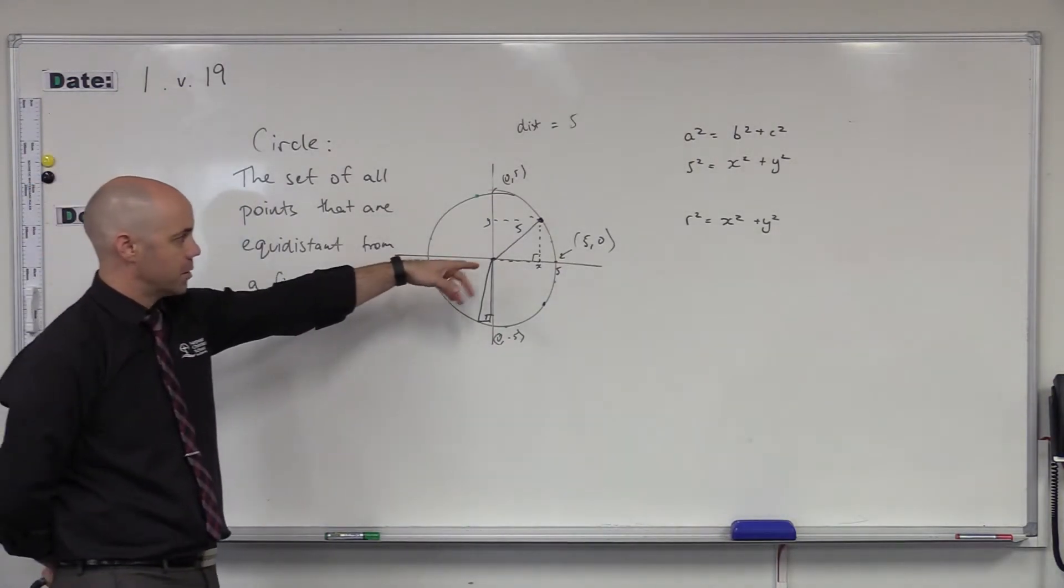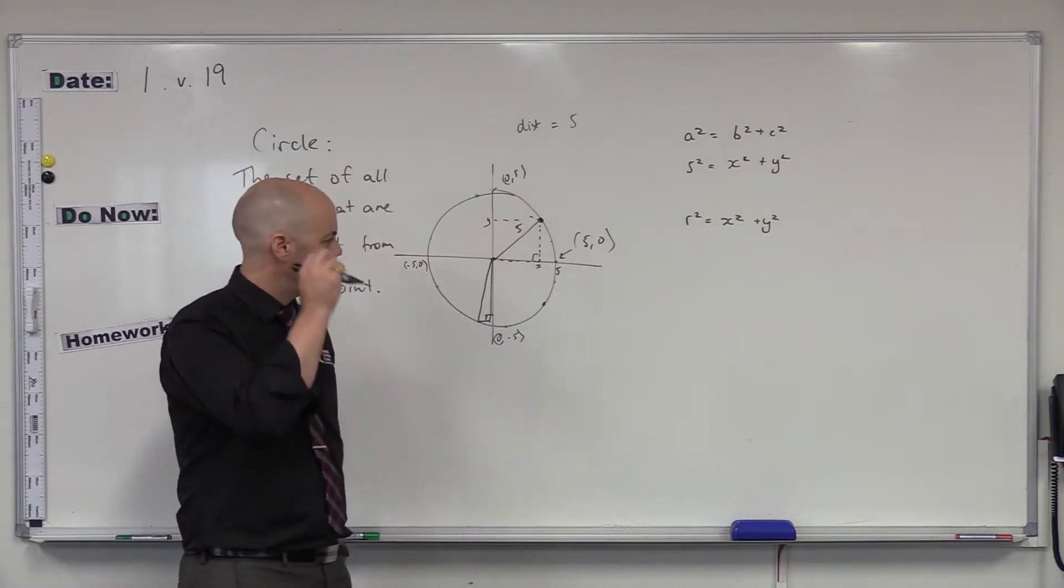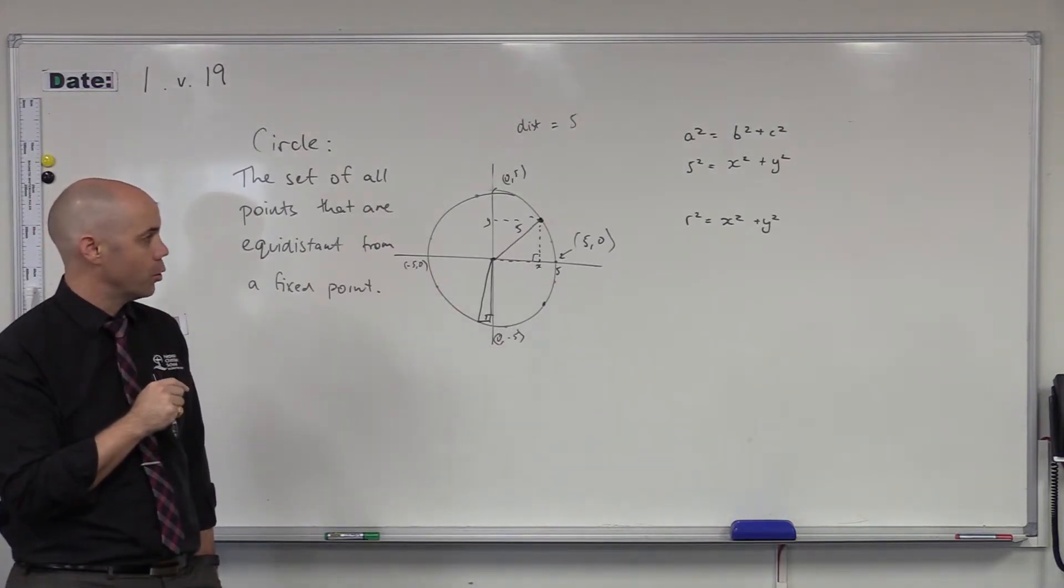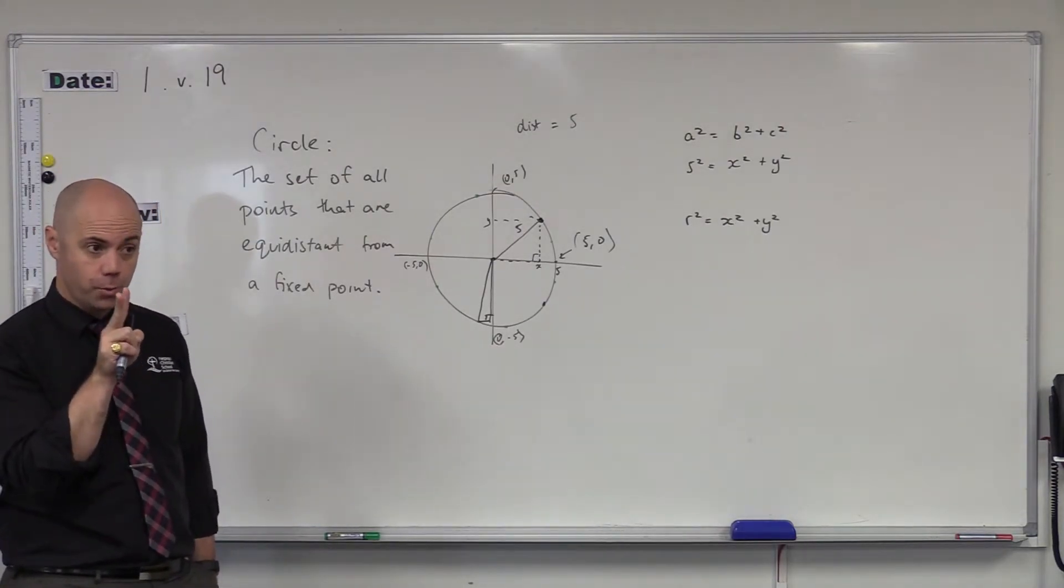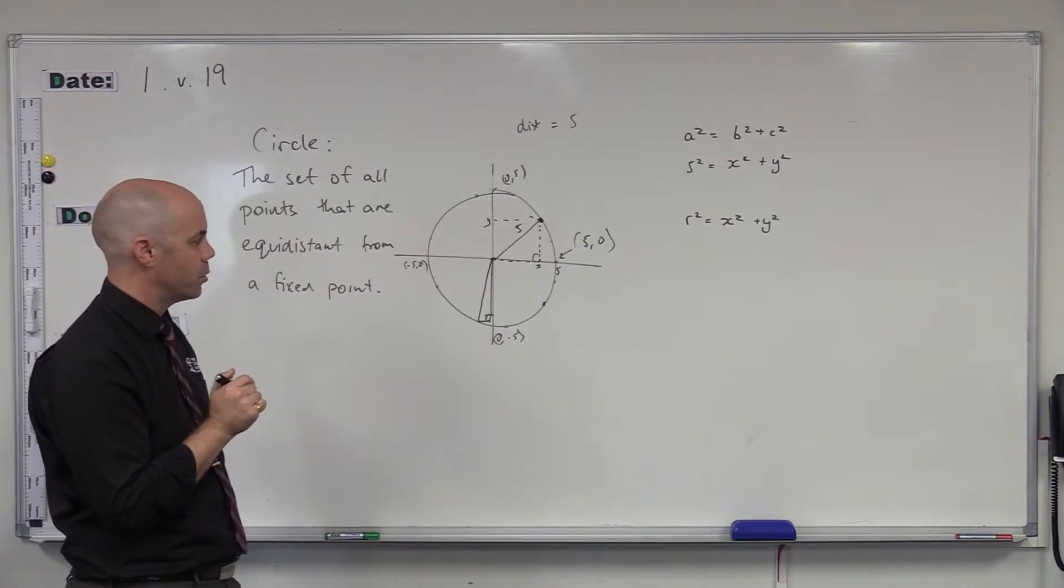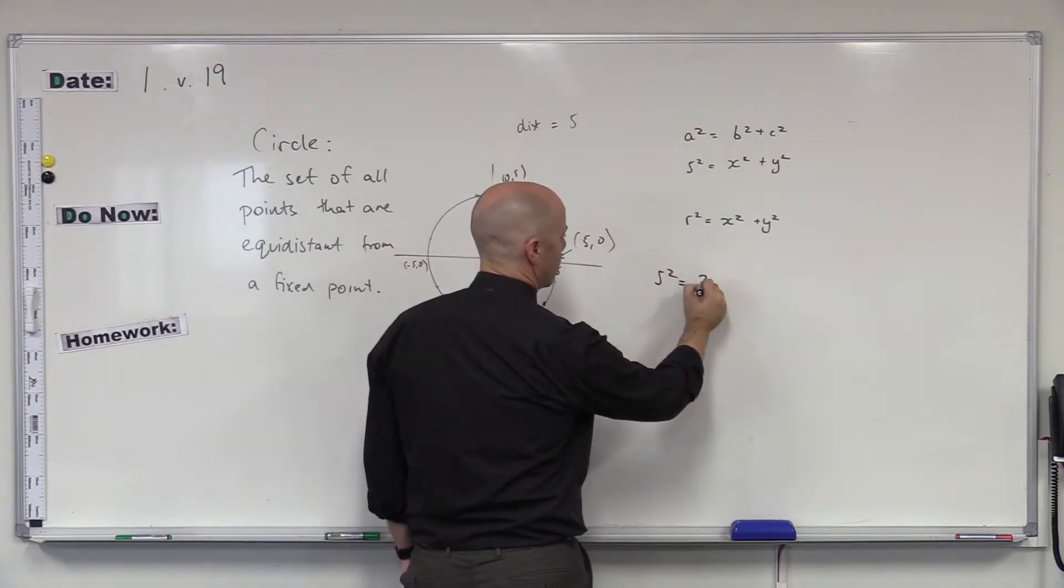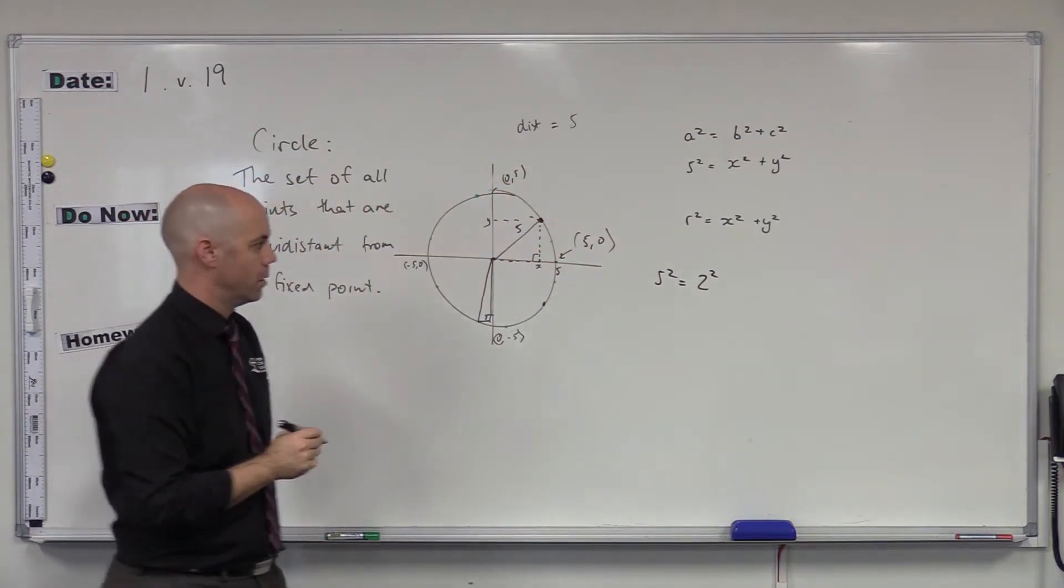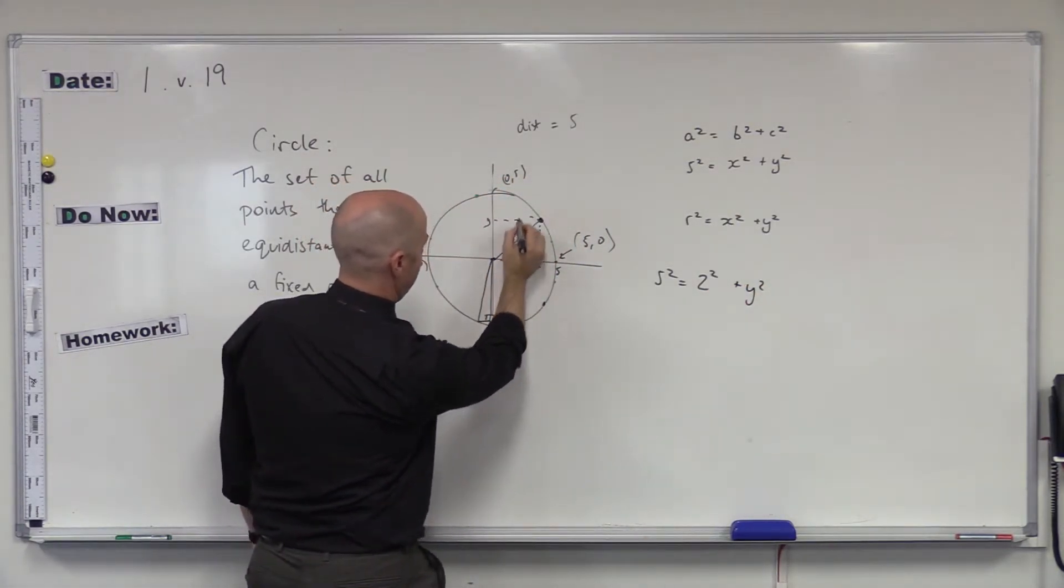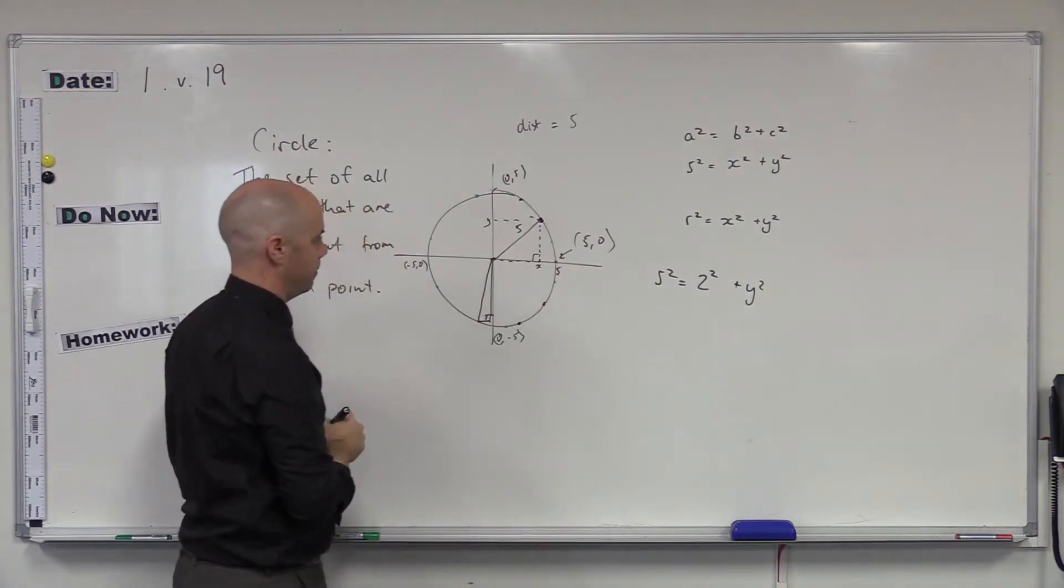Going back to our particular example though, let's use the example with the radius of five. I could ask the question, well, what are the two points of the circle that have an X value of two? What are the two points of the circle that have an X value of two? And so I say, alright, well, five squared equals two squared, and that's going to be my X value, plus Y squared. So we're asking two out here. So what is that point there, and what is that point there? There's a two there.